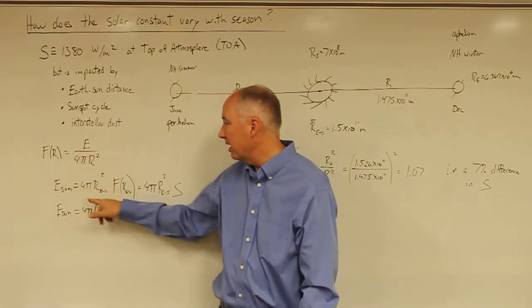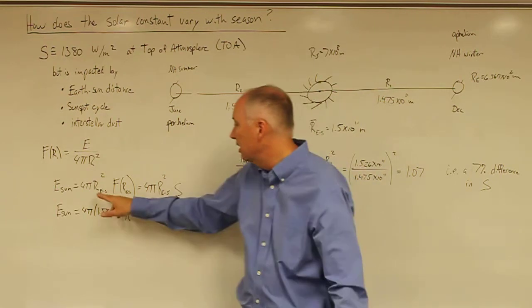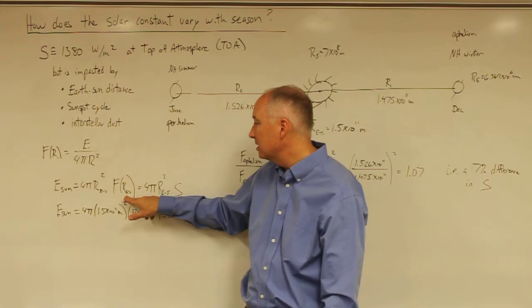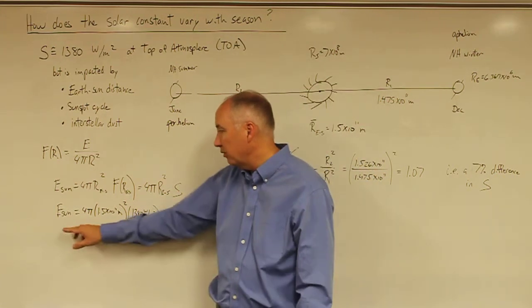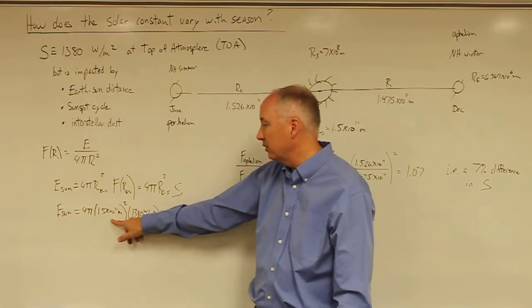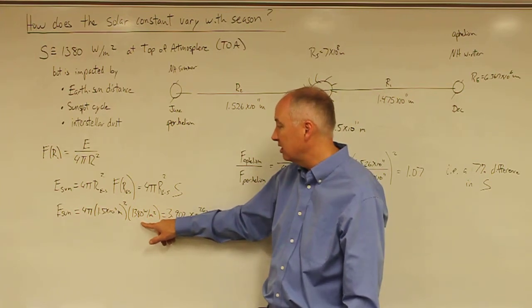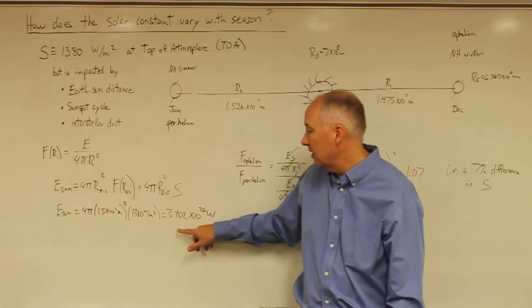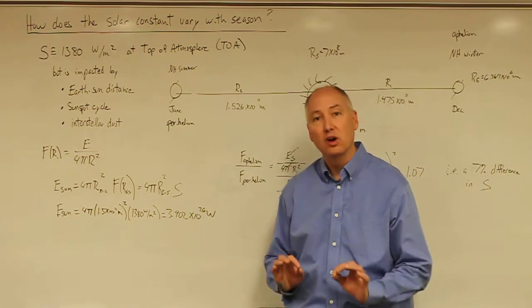If we translate this into the Earth-Sun system to calculate the flux of the Sun, we'll solve for e of the Sun. e of Sun is equal to 4 pi r squared, where r is the mean Earth-Sun distance times the measured flux at the top of the Earth's atmosphere, which in this case is our solar constant, s. So if we want to solve for the flux of the Sun, you'll get 4 pi times the mean Earth-Sun distance squared times the measured solar constant at the top of the Earth's atmosphere. That gives a flux of the Sun of 3.9 times 10 to the 26 watts, a really large number.